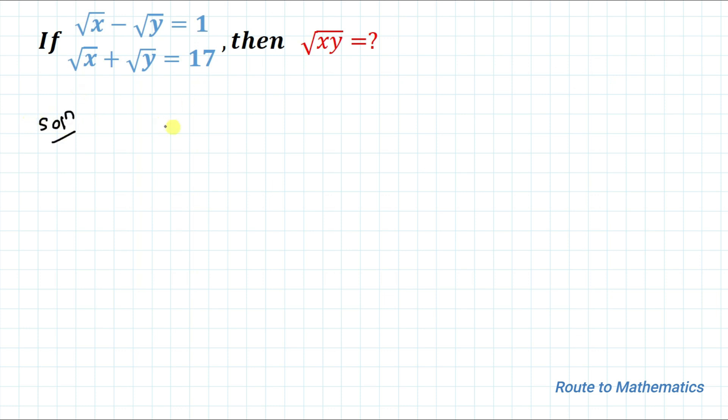Solution: Our first equation is root x minus root y equals 1. This is the first equation. Another equation is root x plus root y equals 17. This is the second equation.